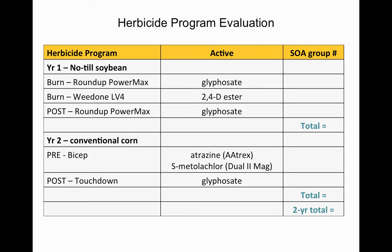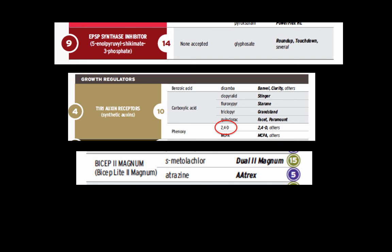It's not a very diverse program. The corn is conventional and tilled, so no need for burndown herbicides. We've picked BICEP, which is a mix of atrazine and S-metolachlor, and still coming back with glyphosate post. It's a relatively simple program and one that probably did lead to some resistance issues in some situations. Looking up glyphosate on the chart shows it's Group 9; 2,4-D is Group 4; and BICEP 2 Magnum has metolachlor (Group 15) and atrazine (Group 5).